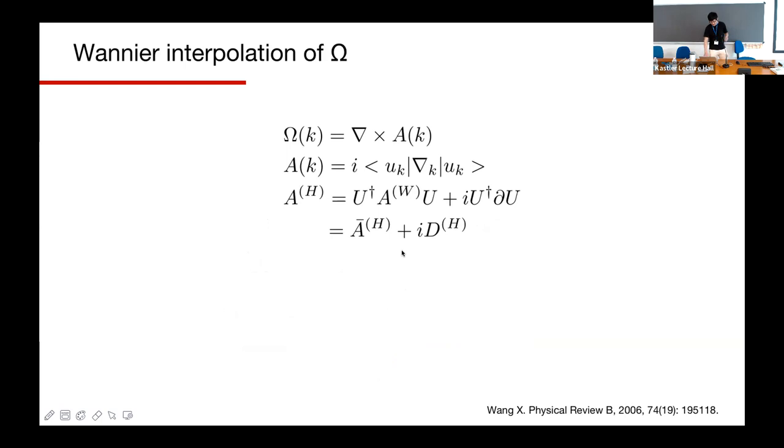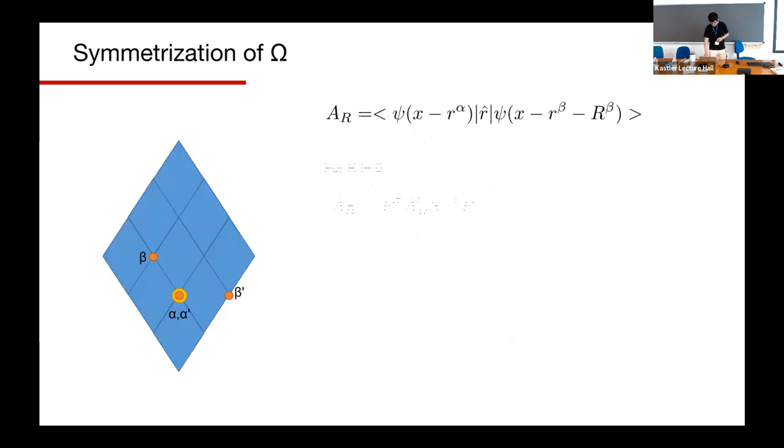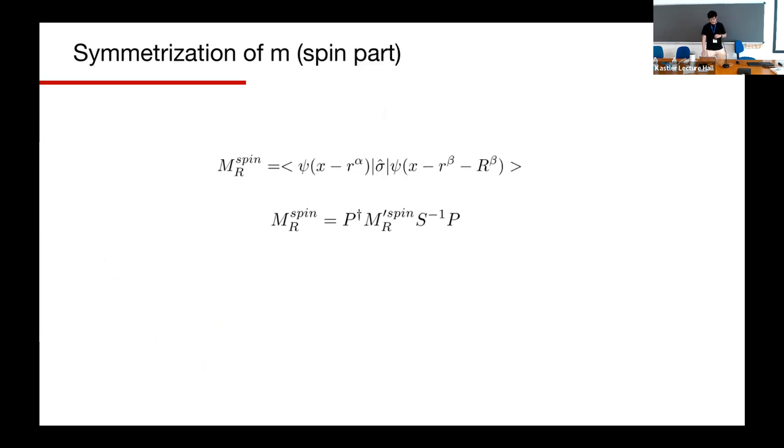With Wannier functions, they have two terms. One is A-term and one is D-term. The A-term, we can use a position element to calculate and D-term, the Hamiltonian is enough. Hamiltonian, we already know how to symmetrize it and how to symmetrize the position element. Actually, it's the same way. The only difference, we need an additional S. S is the rotation matrix because it's a vector. We need to rotate a vector again. There is some special event when R equals to zero, because when R equals to zero, the diagonal element of the A matrix is Wannier centers. If we rotate Wannier centers by S, the Wannier centers sometimes from the home unit cell change to another unit cell. We need an additional term to push the Wannier centers back to the home unit cell.